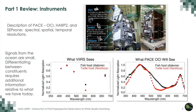Just a brief review of some important points we saw in part one. Dr. Manino talked about PACE instruments — he described OCI, HARP-2, and SPECS1. Spectral, spatial, and temporal resolutions were discussed, and here is the figure showing the different instruments on the satellite. It was also noted that signals from the oceans are small, and differentiating between constituents requires additional spectral information relative to what we have today. The comparison we saw last week showed what a prior sensor would see, where black is fish food and red is turtle food.